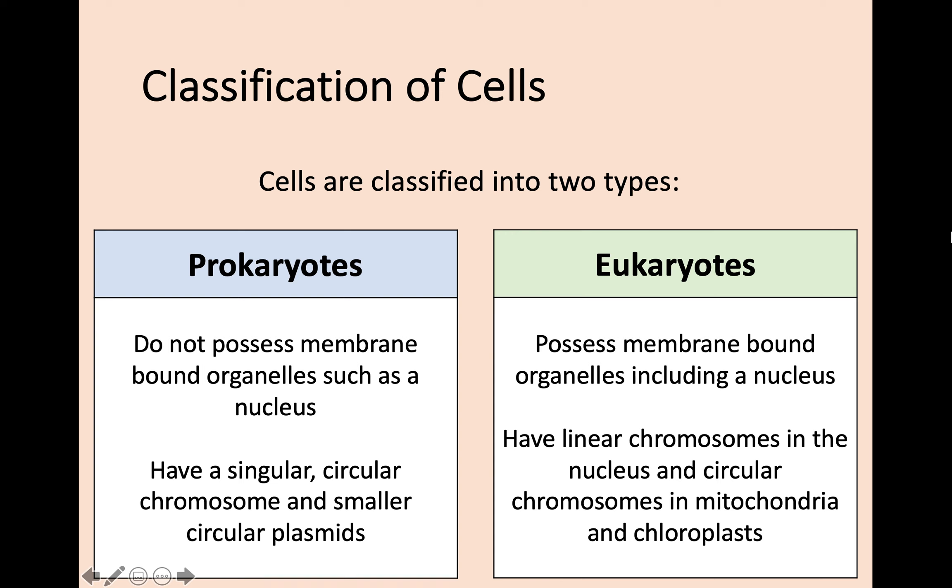You should hopefully remember plasmids from when we looked at bacterial cells in National 5, especially in genetic engineering. The circular chromosomes and circular plasmids are different, but they are both genetic information stored in a certain way. Prokaryotes can be thought of as more simplistic—they're a more ancient form of cell. Whereas the second form, eukaryotes, are a bit different. They're a bit more complex.